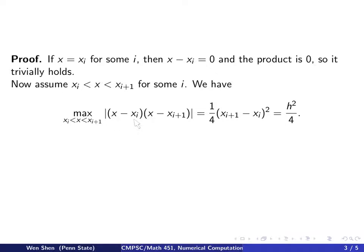So we can have an estimate on the two terms, that is, X minus Xi times X minus Xi plus 1 in absolute value. So we have done this before with A and B here. So if we just change them into A and B, and this is what we have, a quarter times B minus A square, where this B minus A here takes this form, and it's exactly H. So we have H square over 4.